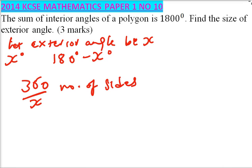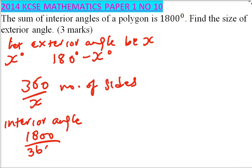So once you get the number of sides, to get the interior angle, we say it is the sum of the interior angle divided by the number of sides, which we have said is 360 degrees divided by X. That is equivalent to 180 minus X degrees.